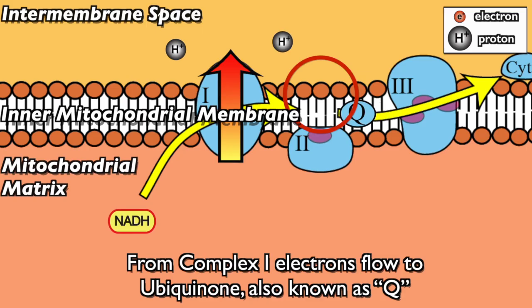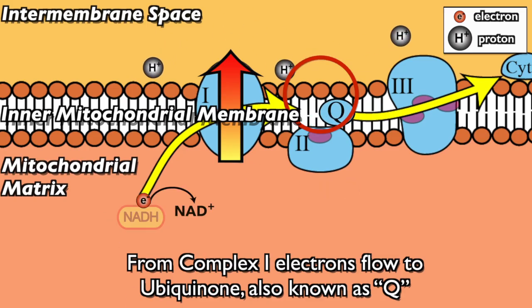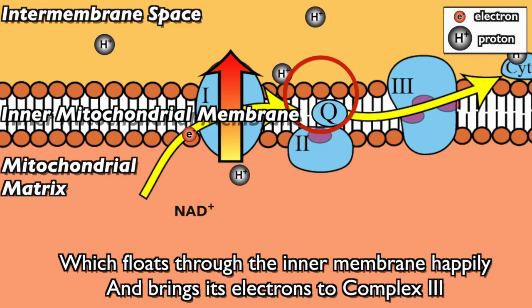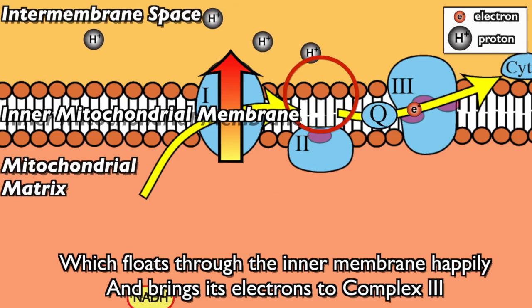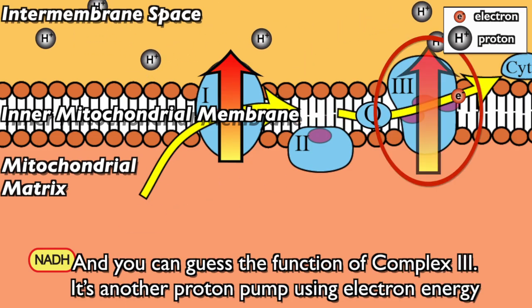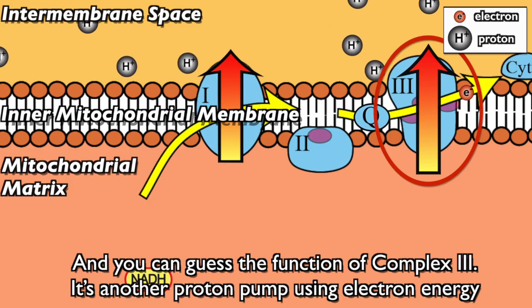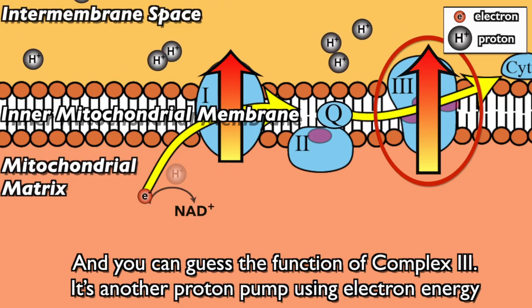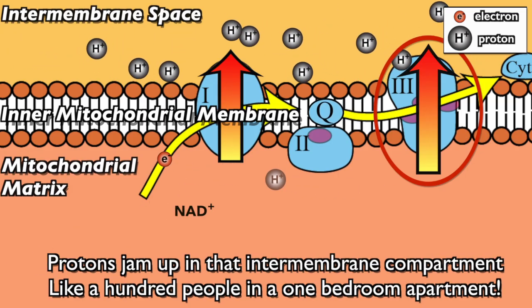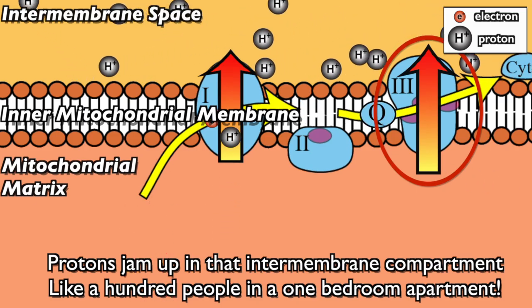From complex one, electrons flow to ubiquinone, also known as Q, which floats through the inner membrane and brings its electrons to complex three. Complex three is another proton pump using electron energy. Protons jam up in that intermembrane compartment like a hundred people in a one-bedroom apartment.